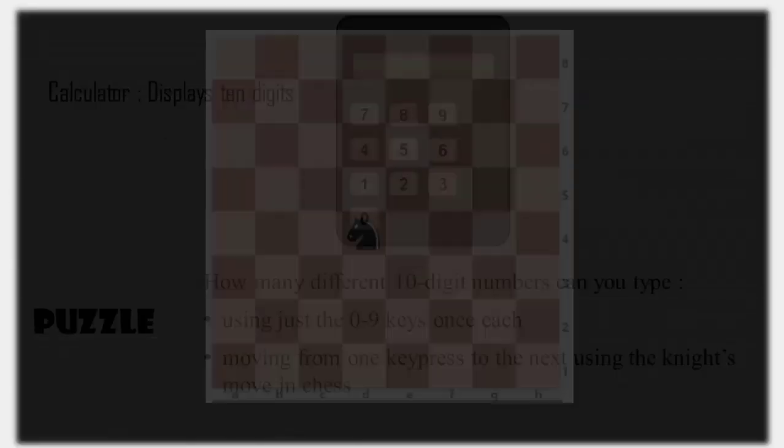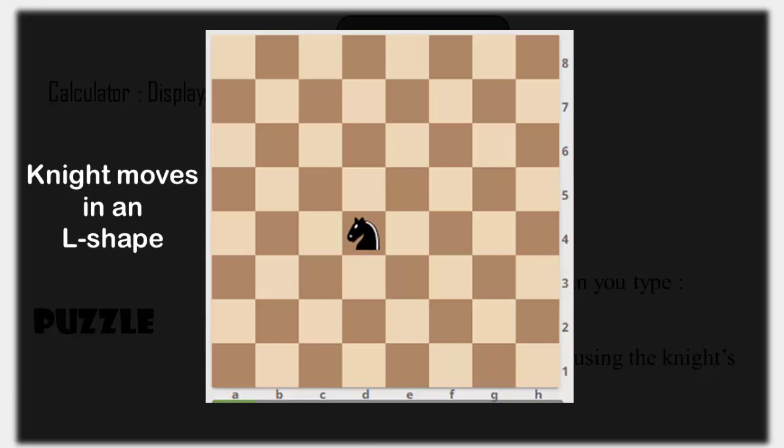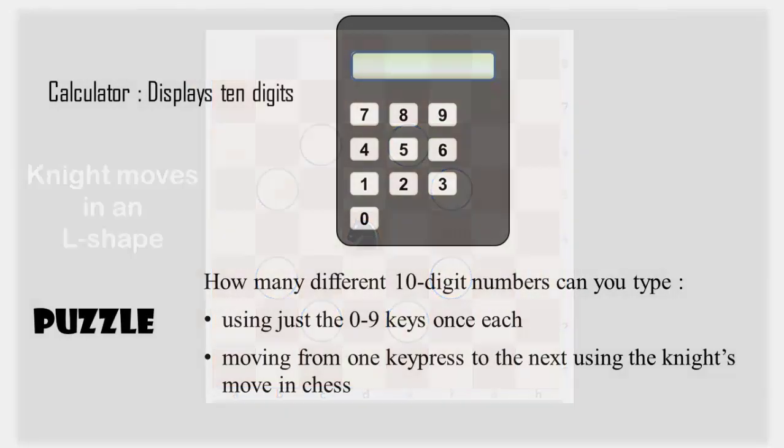In chess, the knight moves in an L shape. Two squares up and one across, one square up and two across, one square down and two across, or two squares down and one across. On the calculator, it would look something like this.